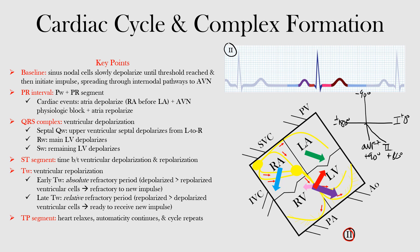The areas we're going to discuss are the baseline — we'll come to see that becomes the TP segment — so the baseline being this flat area here. Then we have the PR interval. The PR interval includes the P wave and the PR segment. This is our P wave, and then our PR segment is this portion here — we'll call it PRS. So the PR interval is from the beginning of the P wave up until the beginning of our QRS complex.